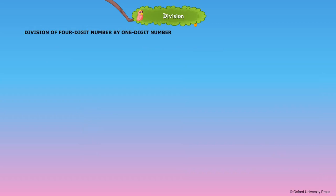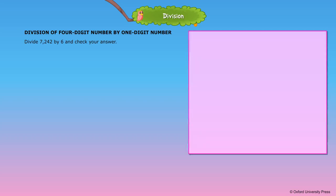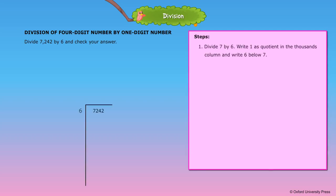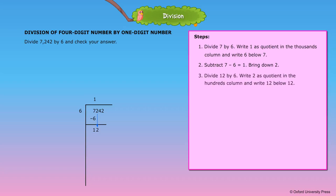Division of a 4-digit number by a 1-digit number: Divide 7,242 by 6 and check your answer. Step 1: Divide 7 by 6. Write 1 as quotient in the thousands column and write 6 below 7. Step 2: Subtract — 7 minus 6 is equal to 1. Bring down 2. Step 3: Divide 12 by 6. Write 2 as quotient in the hundreds column and write 12 below 12. Step 4: Subtract — 12 minus 12 is equal to 0. Bring down 4.